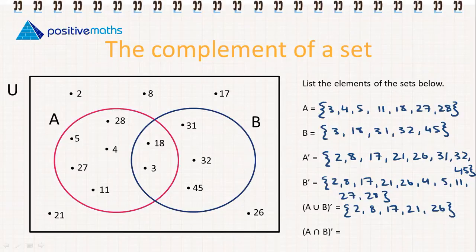Now we have A intersection B complement. So this is all of the elements outside of A intersection B. It will be 2, 8, 17, 4, 5, 11, 28, 27, then we have 31, 32, 45, 21, and 26.